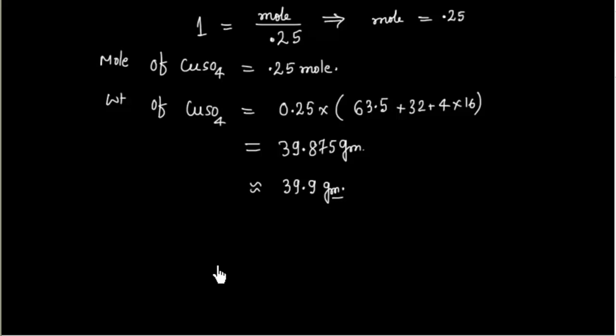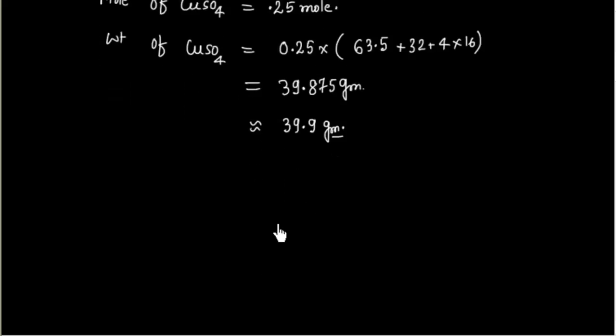CuSO4. So what we have to take, we have to weigh 39.9 gram of CuSO4. So what will be the first step? So first step, step one, weigh 39.9 gram CuSO4.